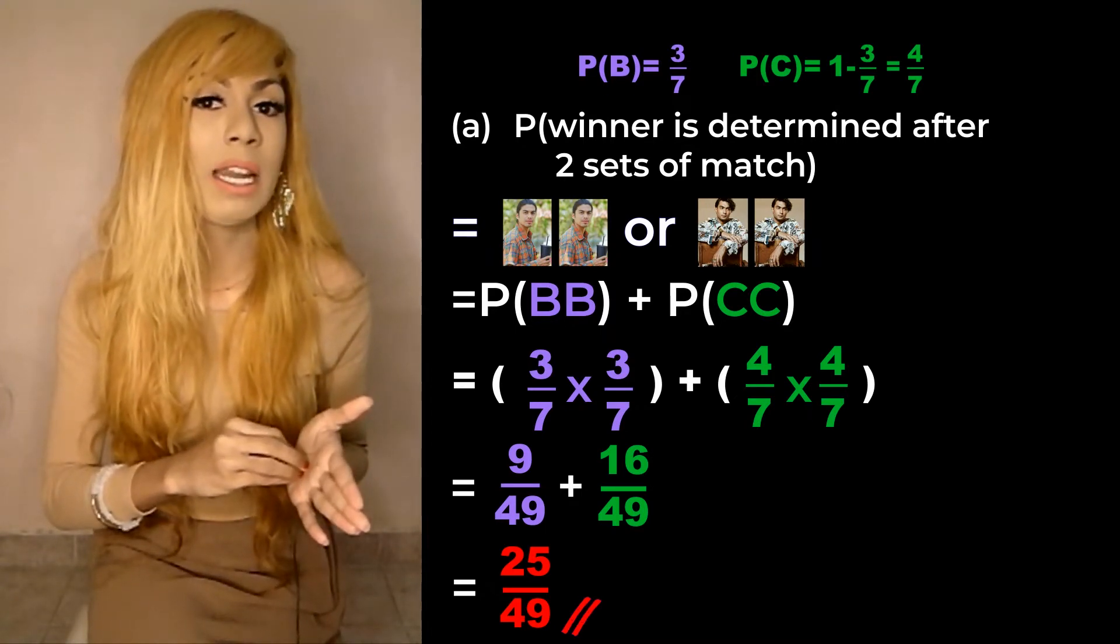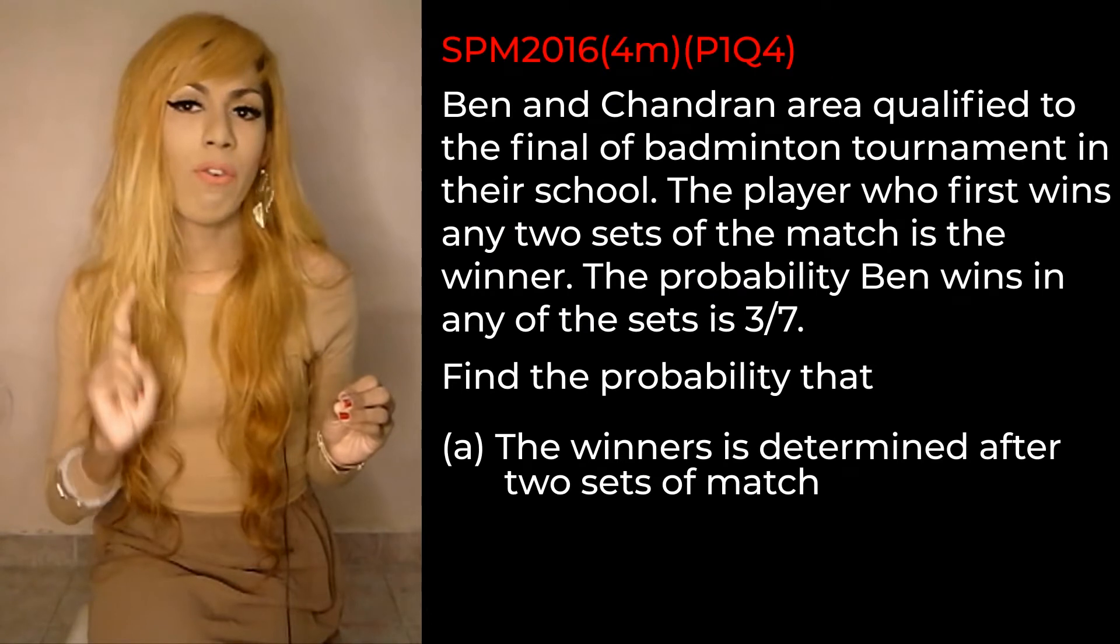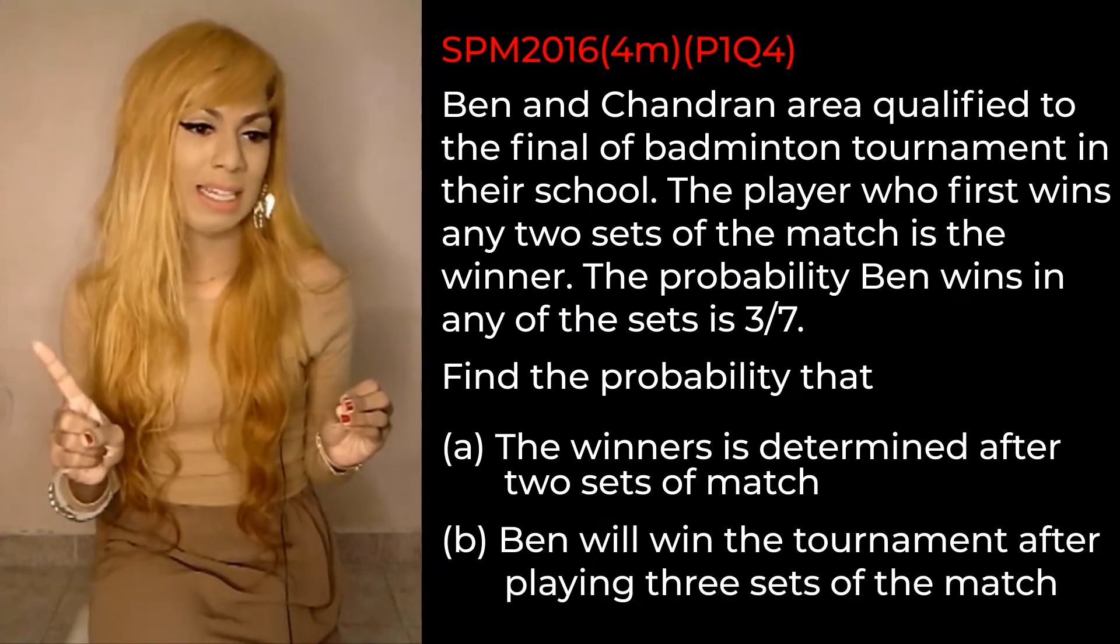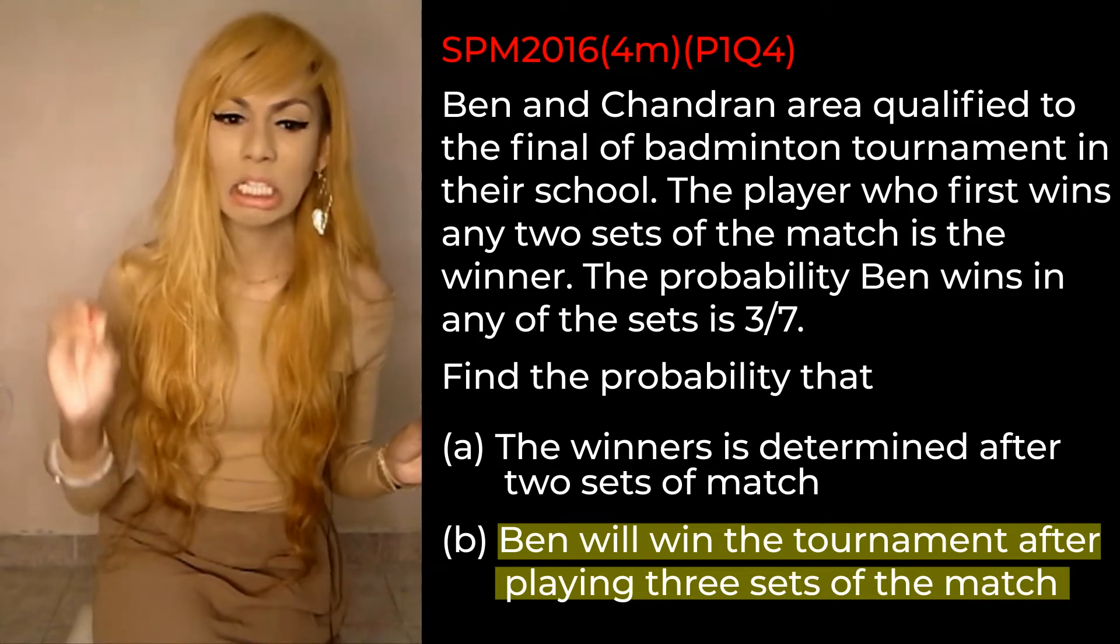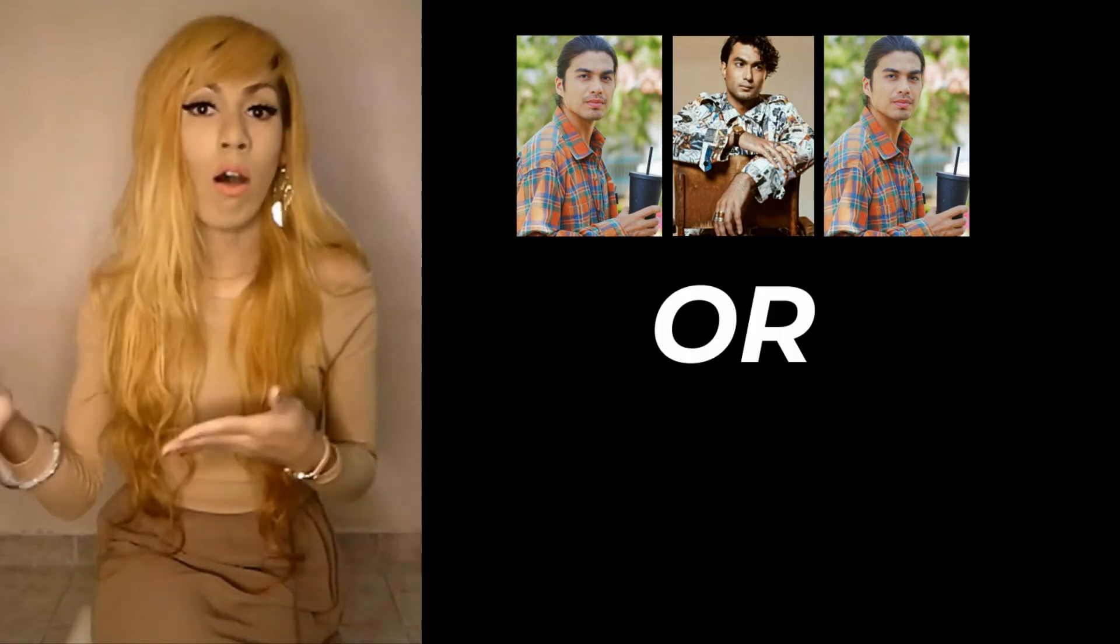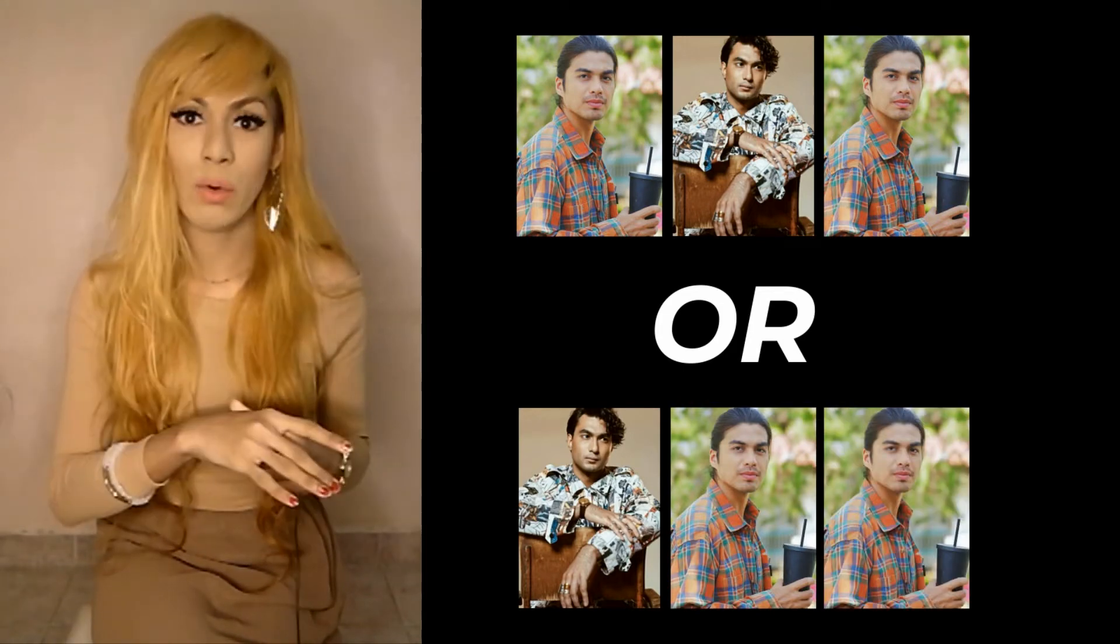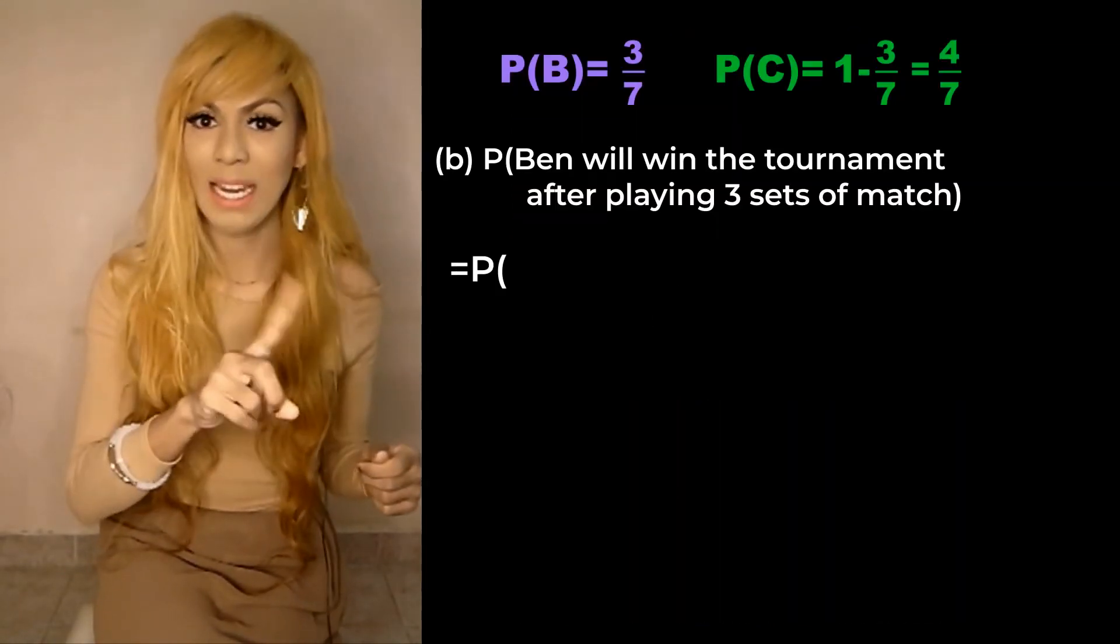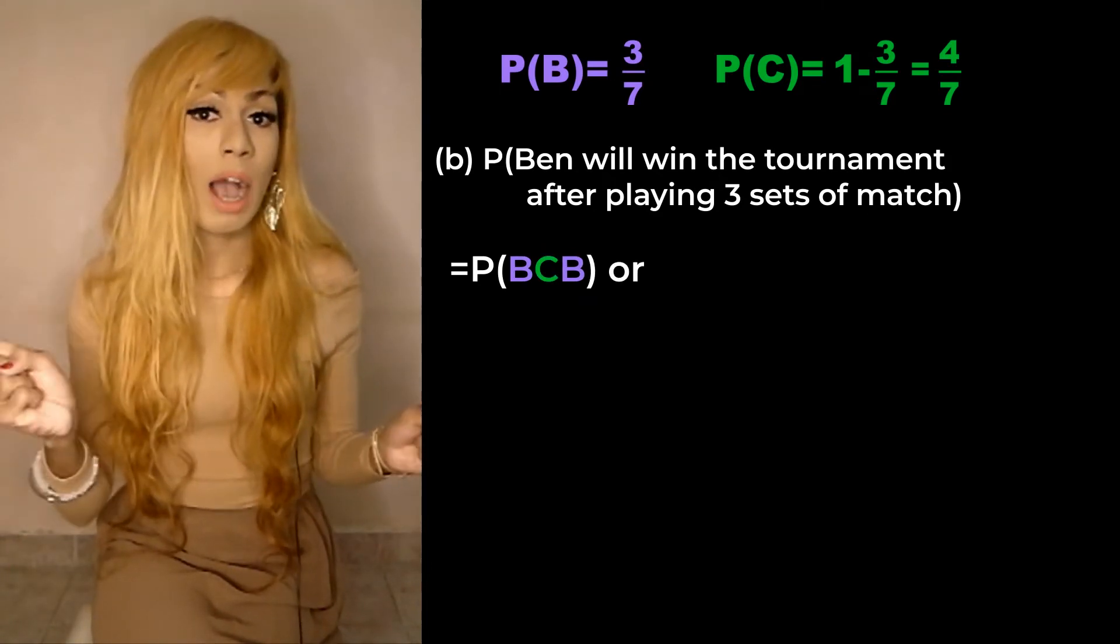So let's take a look at part B: find the probability that Ben will win the tournament after playing three sets of match. It can be BCB which is Ben win and then Chandran and then Ben, or it can be Chandran win first, so it can be CBB. So I would have P(BCB) or I will have P(CBB).